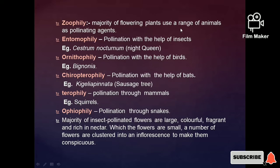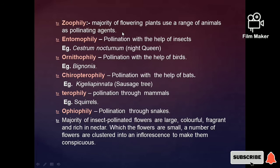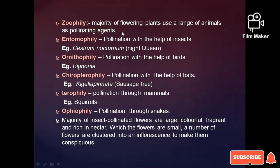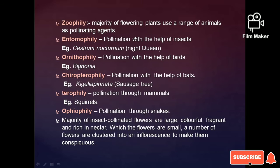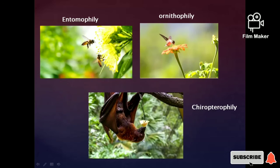The majority of flowering plants use a range of animals as pollinating agents — this is called zoophily. Plant-eating animals like goats, cows, and buffalo can by chance transfer pollen grains. The second type of biotic pollination is entomophily, which is pollination with the help of insects such as bees.